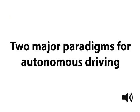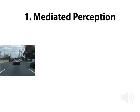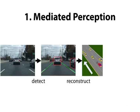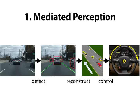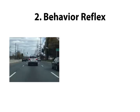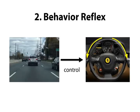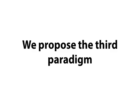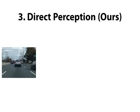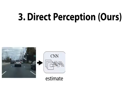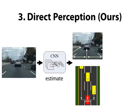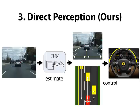There are two major paradigms for autonomous driving. The mediated perception approach detects interested objects in the image and computes driving commands based on those detections. The behavior reflex approach maps the input image directly to driving commands. We propose a third paradigm: given an image, our direct perception approach estimates a few key affordance indicators, then computes the driving commands based on those indicators.